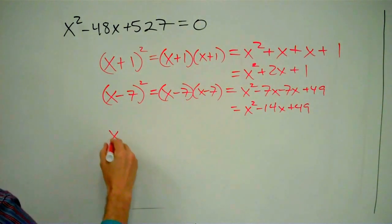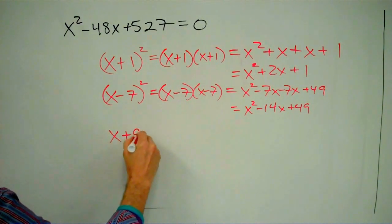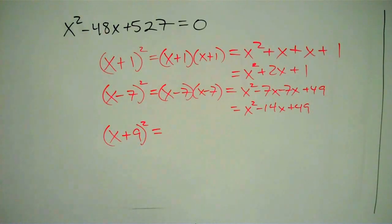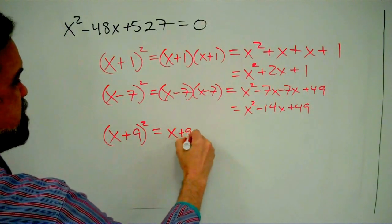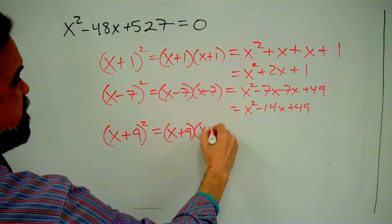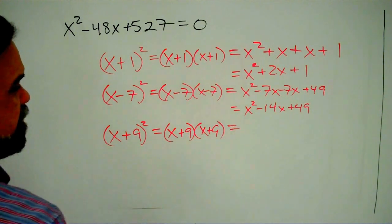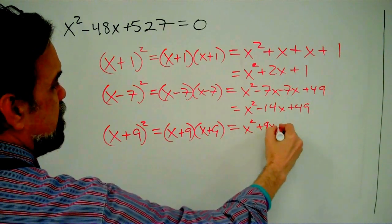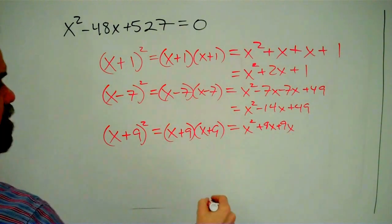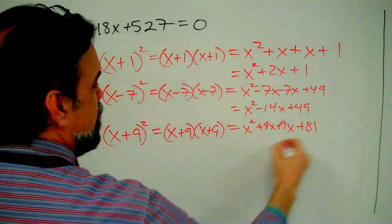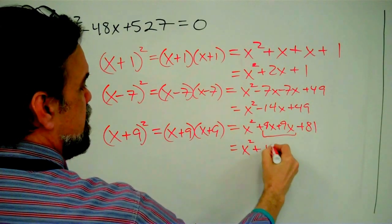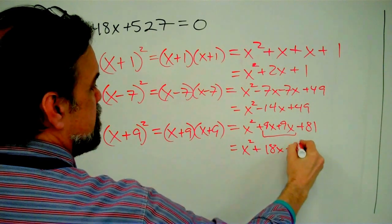One more: (x + 9)². That's (x + 9) times (x + 9), and that equals x² + 9x + 9x + 81. So that's going to be x² plus, combining these, 18x + 81.